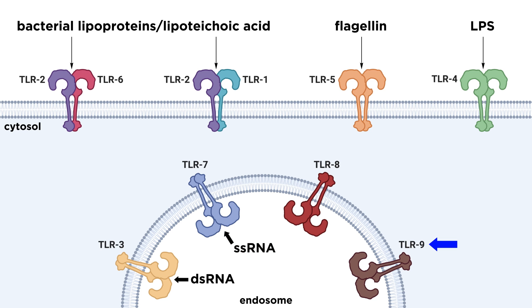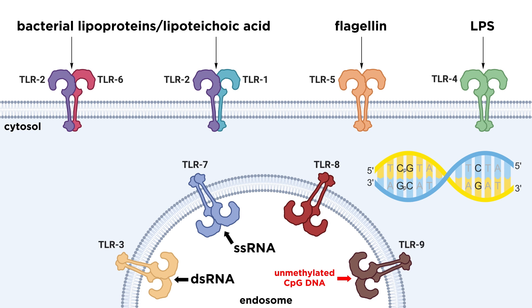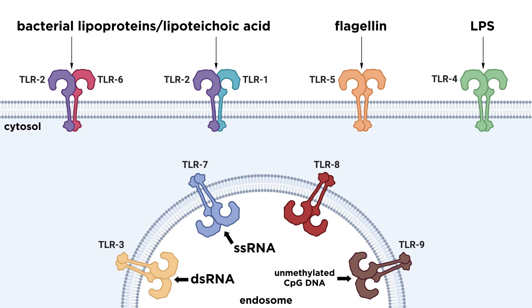Finally, TLR9 is another endosomal sensor, and it recognizes what is called unmethylated CpG DNA. CpG DNA is a sequence involving cytosine and guanine being adjacent to each other, with the cytosine being at the 5' end. In mammals, this sequence is heavily covered in methyl groups, but not in bacterial or some viral DNA, hence the term unmethylated. There are a few other TLRs that are common in mammals, but we'll stop here for now.